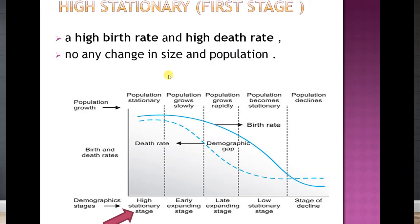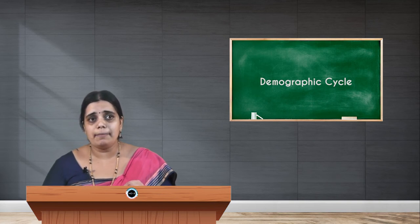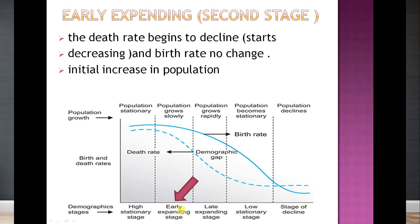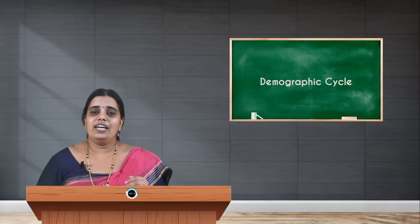The second stage is the early expanding phase. Here, the death rate begins to fall — the dotted line comes down — while the birth rate has no change. Slowly, the demographic gap is increasing, so the population grows very slowly. This is the early expanding stage: there is initial low growth of population, the birth rate may remain stationary, but the death rate begins to fall down.